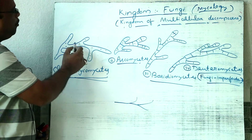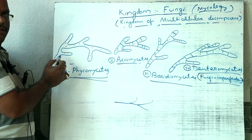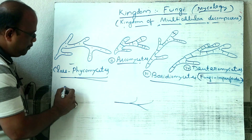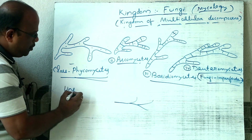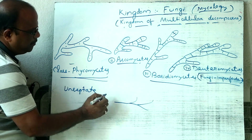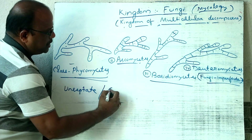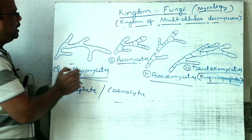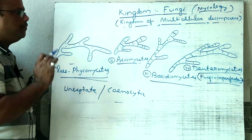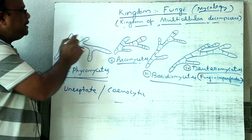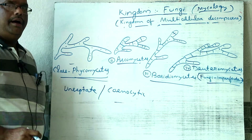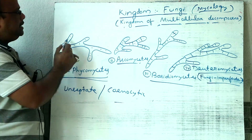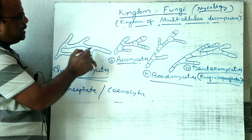The mycelium in Phycomycetes is unseptate and coenocytic. Phycomycetes are either parasites or saprophytes. Their mycelium has no septum — it is the lower fungi class.